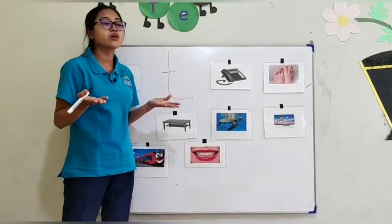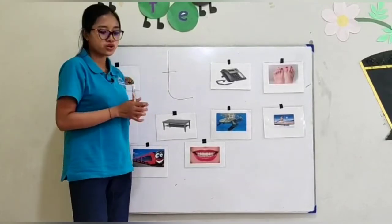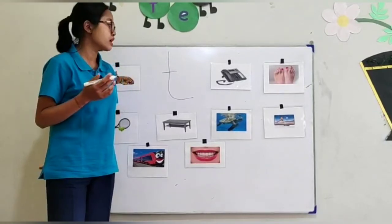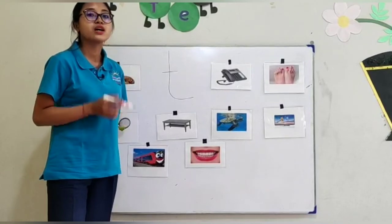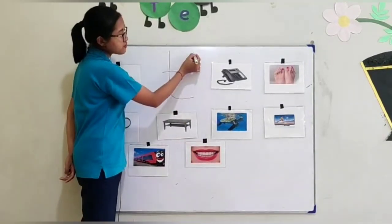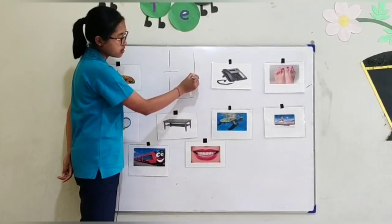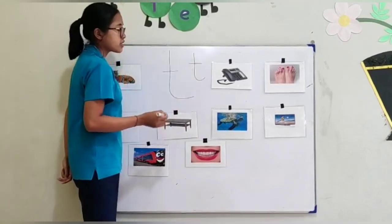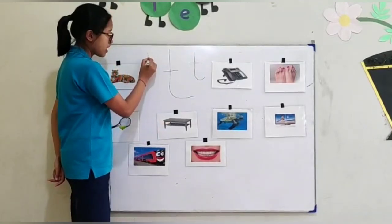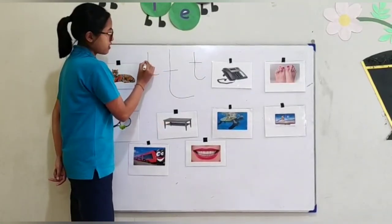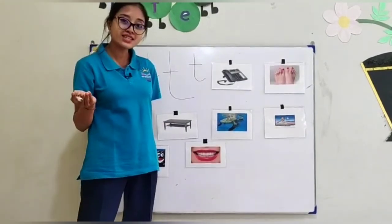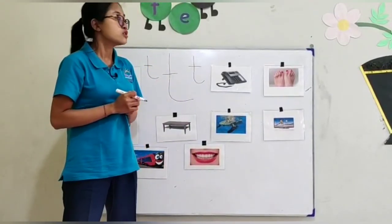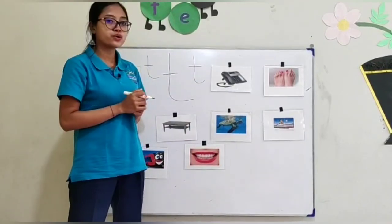Do you know how to write the sound T? I'll show you. Don't forget, if you want to write the sound, remember to always start from the top. Let's start from the top — it goes down, make a curve, and then don't forget to make a line in the middle. One more: down, curve, line in the middle. It's easy, right? I know all of you can do writing sound T!